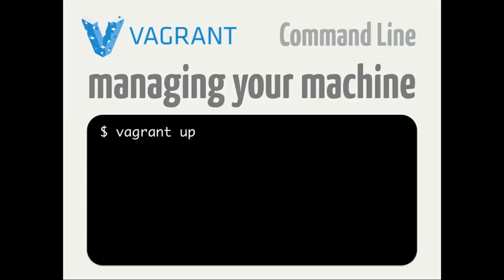Vagrant provides a command line interface to interact with your machines. You change into your project directory, run 'vagrant up,' and it'll spin up your machine — that simple. The counter to that is 'vagrant destroy': when you no longer want to consume system resources like disk space and memory, you call vagrant destroy and it completely removes the VM. The next time you need it, you just run vagrant up and it comes back exactly as configured — every time, across any machine.